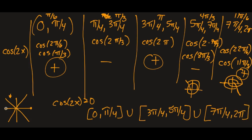You can also observe the pattern from looking at these sections: it's positive, negative, positive, negative. That can help you work around the unit circle a bit more efficiently.